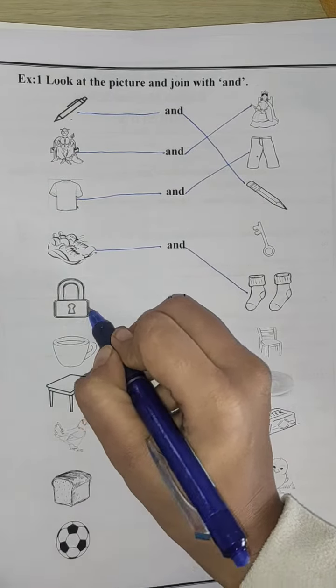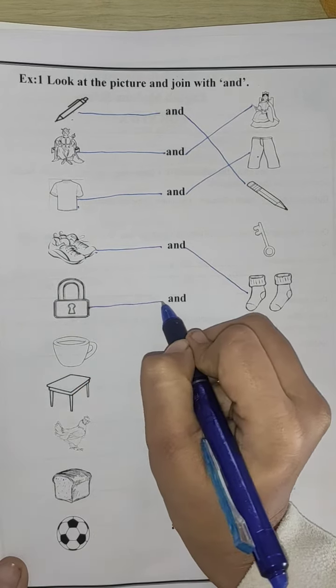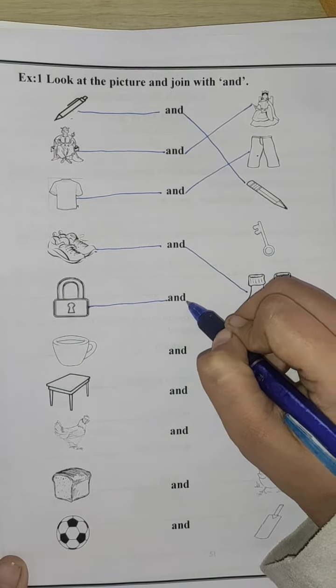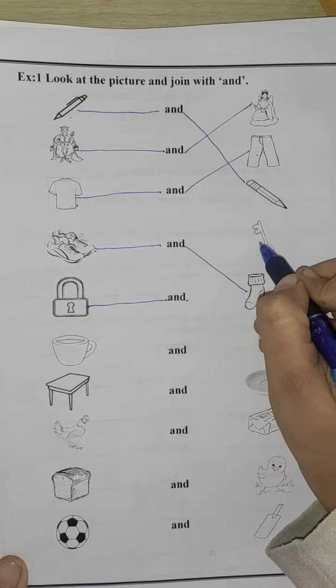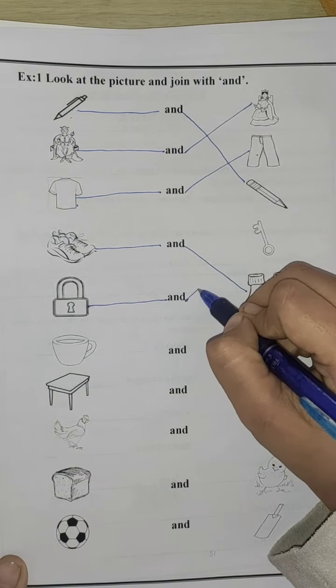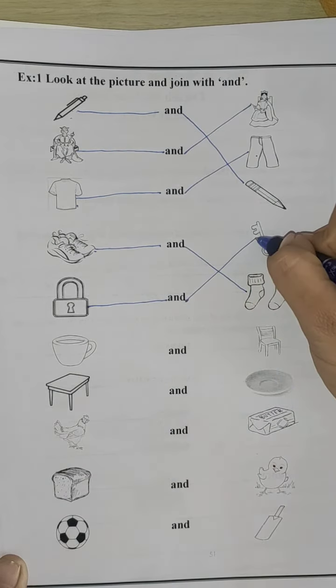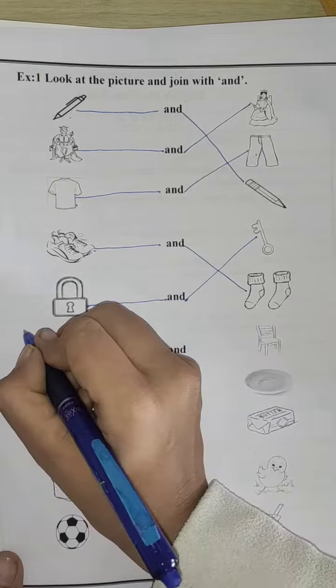Next is lock. Lock and, now match and with lock's pair, key. Lock and key. Now, remaining you have to do in your home book.